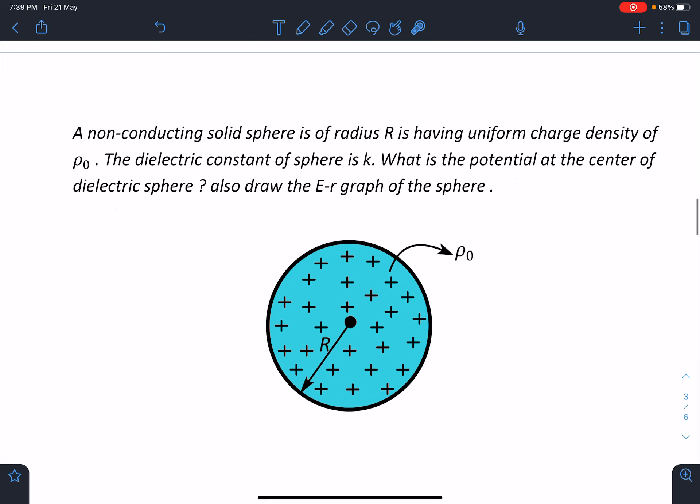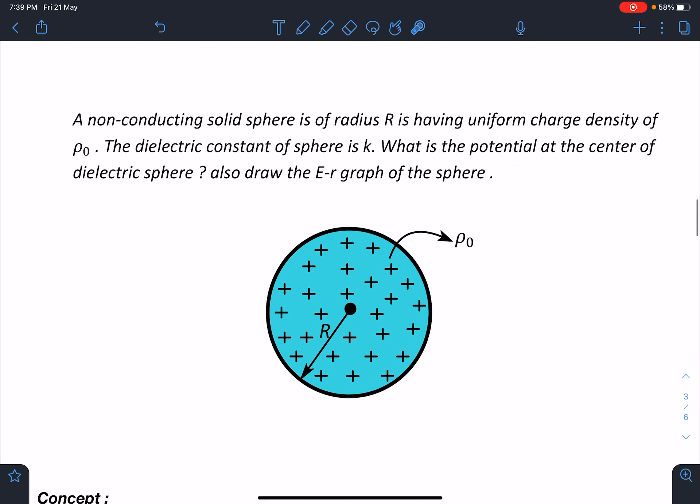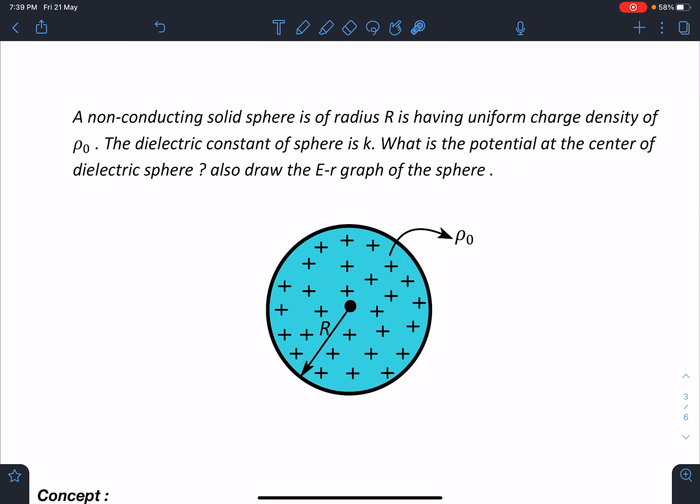So here is the problem statement. A non-conducting solid sphere is of radius R is having uniform charge density of ρ₀. The dielectric constant of sphere is k. What is the potential at the center of dielectric sphere and also draw E-r graph of the sphere.